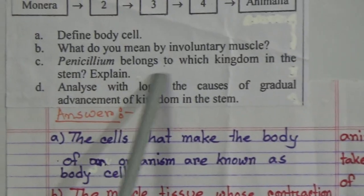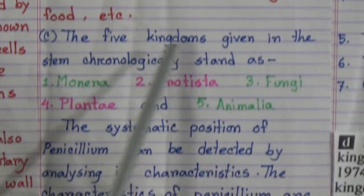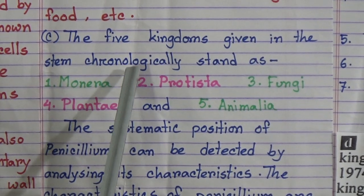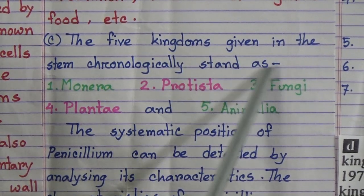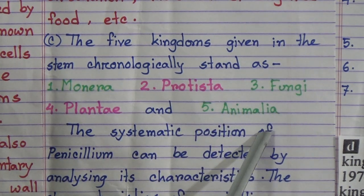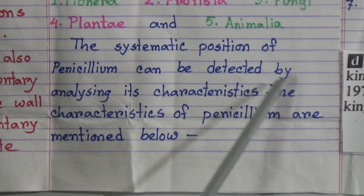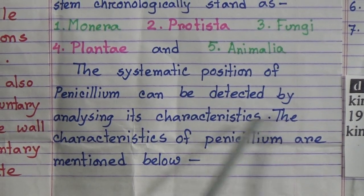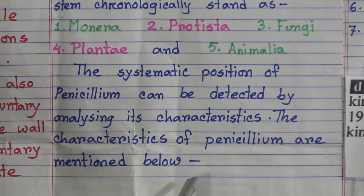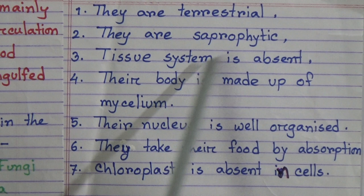Question (c): Penicillium belongs to which kingdom in the stem — explain. Answer: The five kingdoms given in the stem, chronologically, are Monera, Protista, Fungi, Plantae, and Animalia. The systematic position of Penicillium can be detected by analyzing its characteristics. The characteristics of Penicillium are: number one, they are terrestrial; number two, they are saprophytic; number three, tissue system is absent.